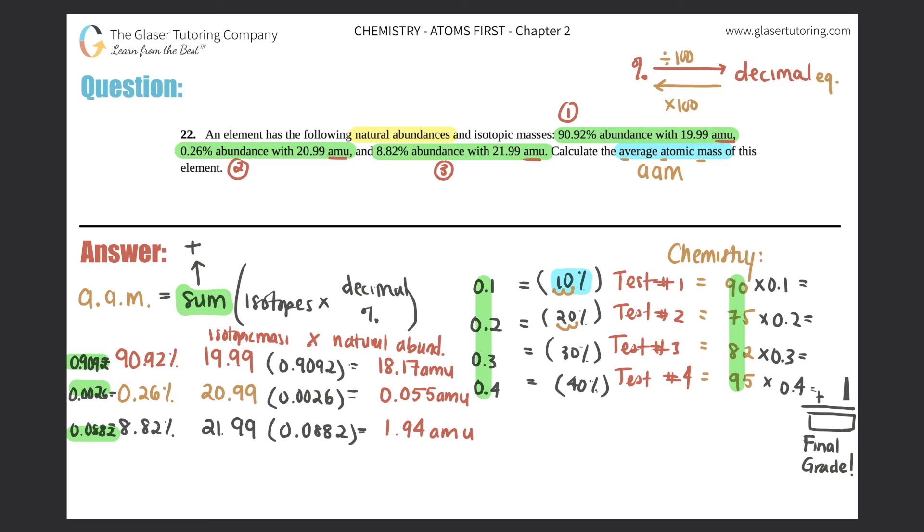There you go. And then what are we going to do after these? Oh, we just add them all together. That's the sum. So, I just add these all together. 18.17 plus 0.055 plus 1.94. So, I get 20.165 AMU. However, we have to do our sig fig rules for adding and subtraction because this is addition. So, the lowest after the decimal was two sig figs. So, this five will just turn that six into a seven. So, your answer would be 20.17 AMU. Box that answer off. That is the average atomic mass of this element.